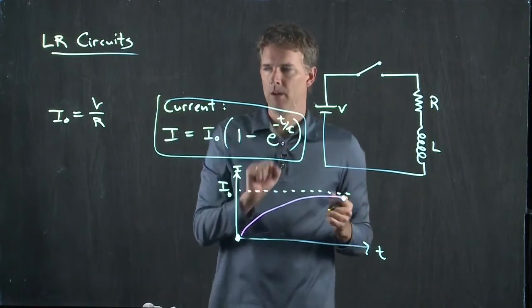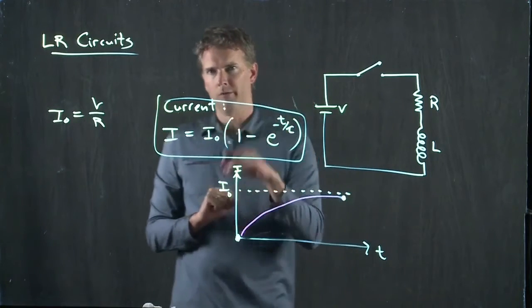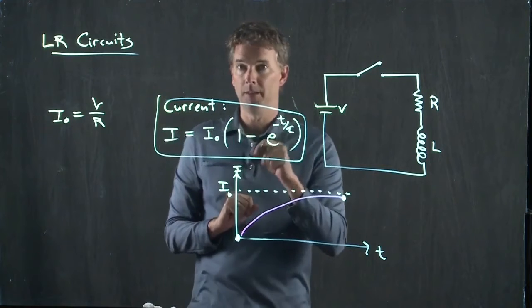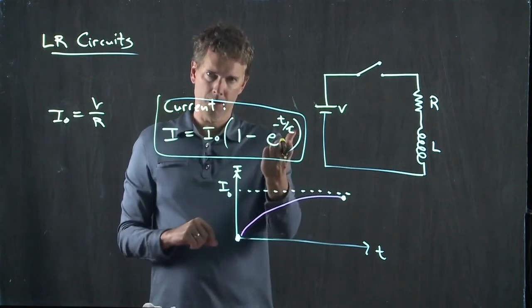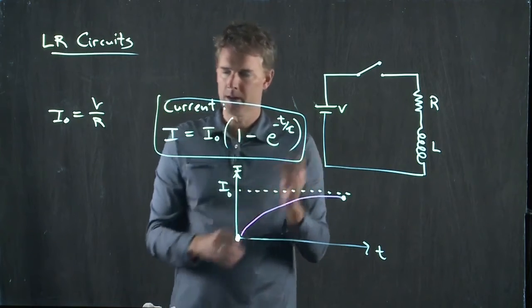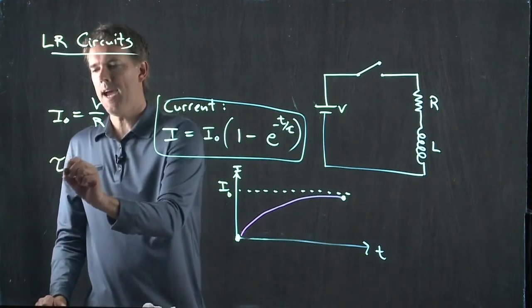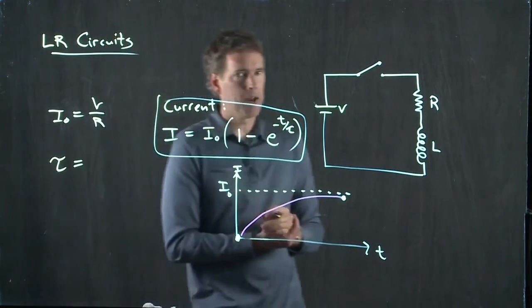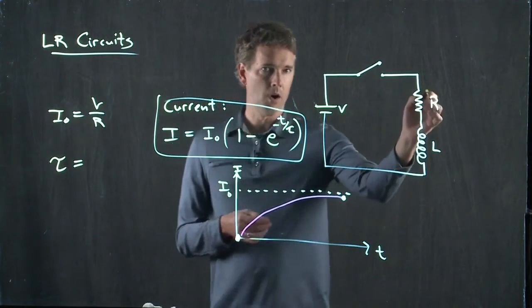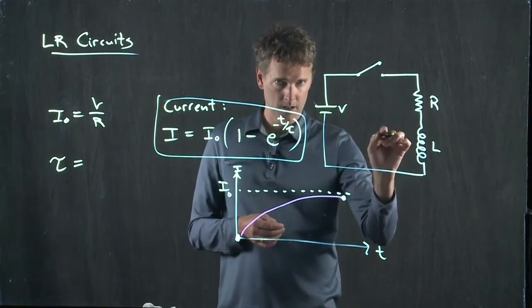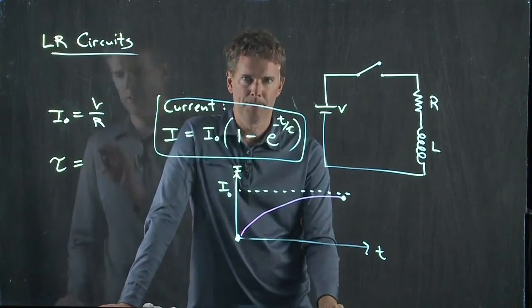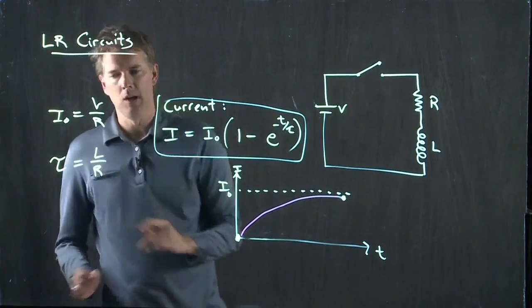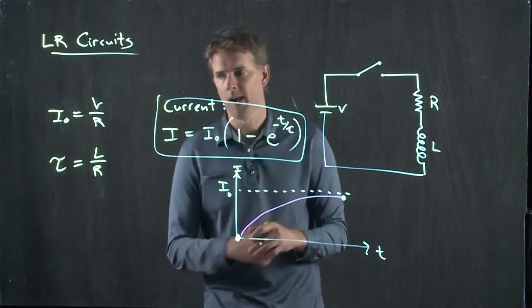What about tau? Remember before, for tau, we had a time constant that went like RC. When we had a big capacitor, longer time constant. Big resistor, longer time constant. So tau here has got to be related to R and to L. Okay? But we need to make sense of which way it should be. So tau is equal to L divided by R. Okay?